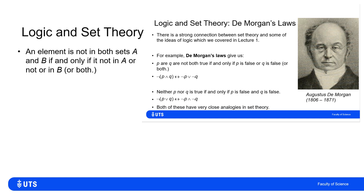In set theory, we would say that an element is not in both sets A and B if and only if it's not in A, or it's not in B, or potentially both. In set notation, X belongs to the complement of (A intersection B) is exactly the same as saying X belongs to A-complement union B-complement. This is exactly analogous to the first De Morgan's law: replacing NOT with complements, OR with union, and AND with intersection gives the exact same statement.